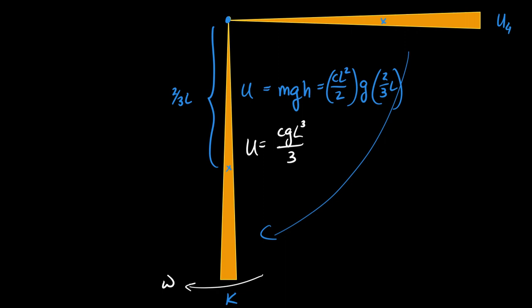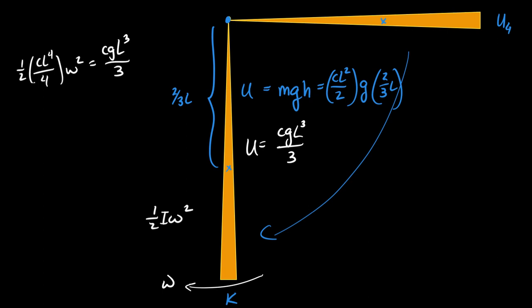Now we figure out how fast it's going at the bottom. At the bottom all the energy is in the form of kinetic energy: one-half I omega squared. Using I equals CL⁴/4, we set one-half times CL⁴/4 times omega squared equal to CGL³/3. You can solve that for omega.